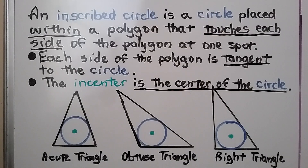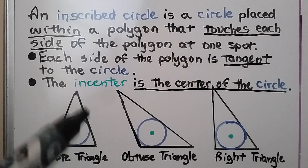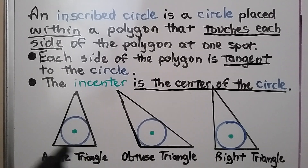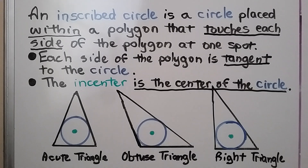An inscribed circle is a circle placed within a polygon that touches each side of the polygon at one spot, and each side of the polygon is tangent to the circle. All three sides are tangent to the circle. The in-center is the center of the circle — the in-center of the triangle. It doesn't matter what type of triangle it is; the in-center is always the center of the inscribed circle.